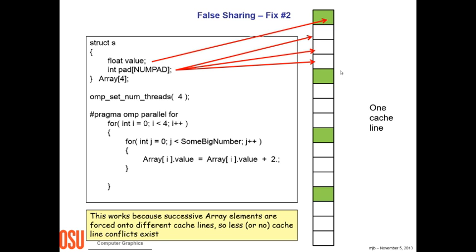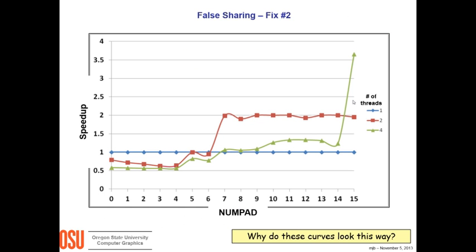Fix number two is a little bit stranger because it's extremely counterintuitive. What it does is add some padding into each structure. So if the padding was, say, three, this would be array element zero where the actual value is right here, but the padding values are empty — we don't care about them. Now, what does this do for us? Let's look at some sample results.